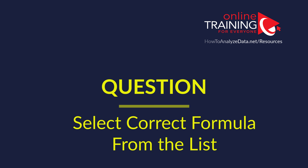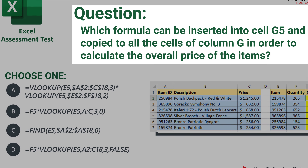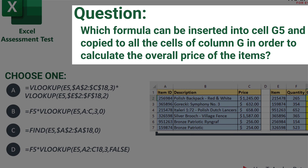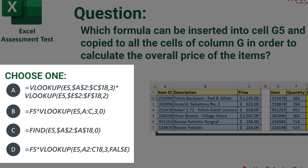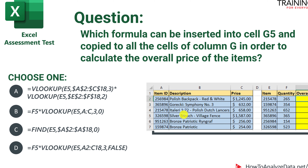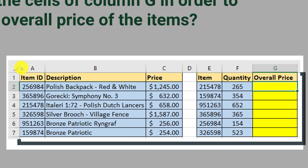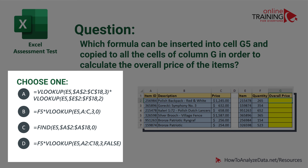Now let's look at a tricky question you frequently see as part of the Excel assessment test — which Excel test is without VLOOKUP, right? Which formula can be inserted into cell G5 and copied to all cells of column G to calculate the overall price of the items? Two of the choices use VLOOKUP, one uses double VLOOKUP, and choice C uses the FIND function. We also have data presented as a snapshot from Microsoft Excel.